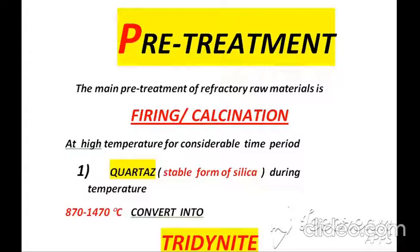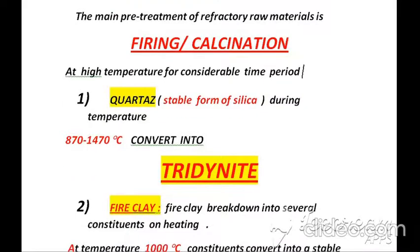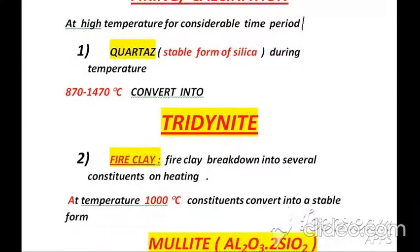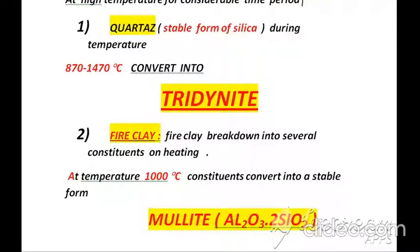After grinding of raw material, we will start pre-treatment. The main pre-treatment of refractory raw material is firing or calcination. At high temperature for a considerable time period: firstly, quartz, which is a stable form of silica, during high temperature from 870 to 1470°C will convert into tridymite. Secondly, fire clay at high temperature will break down into several constituents, and at 1000°C it will convert into mullite.